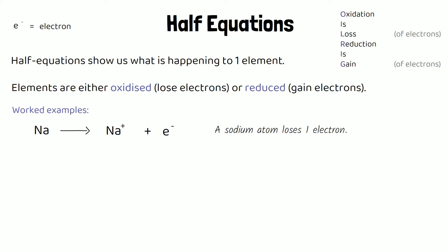This half equation tells us that a sodium atom loses one electron. Now because oxidation is loss of electrons, that means sodium is being oxidised. It's losing an electron.